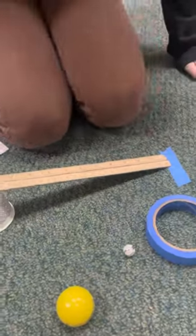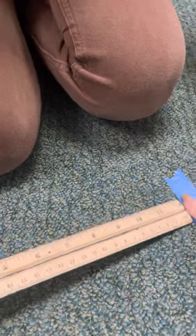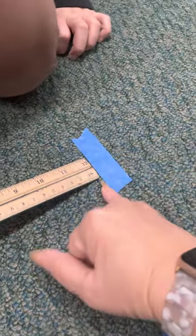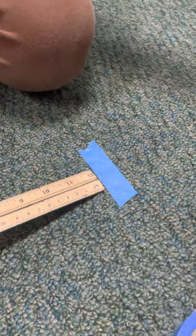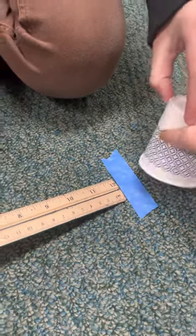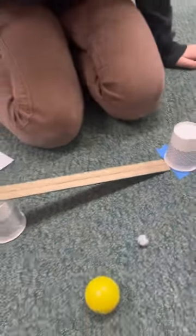And then you have yourself a ramp. You need to create then a little starting point that you're going to be measuring from. So you put tape down right here. And you're going to be measuring from the starting point this side of the tape that's closest to your ruler. And then you'll set the other cup on the other end. So your ramp looks like this.